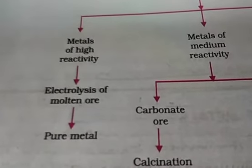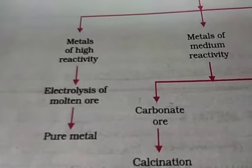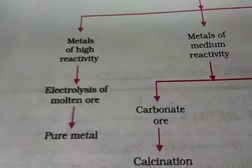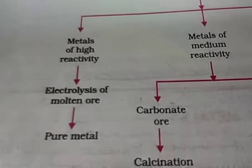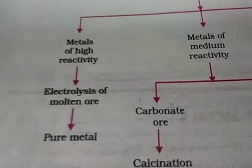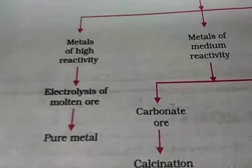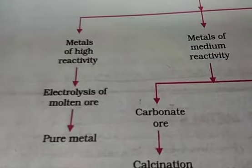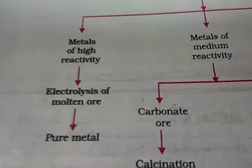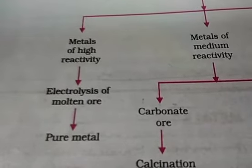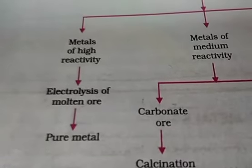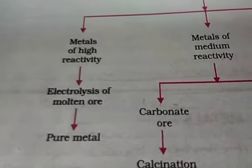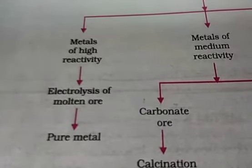Potassium, sodium, and calcium are very high reactive metals. How can these be extracted? Metals of high reactivity can be reduced only by electrolysis of molten ore.